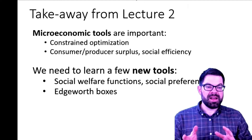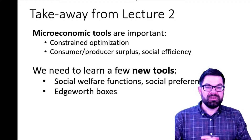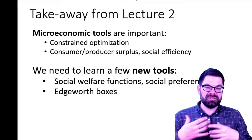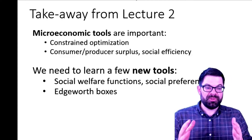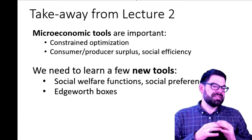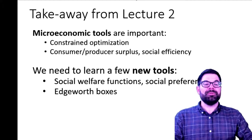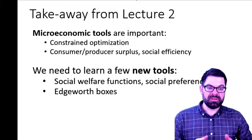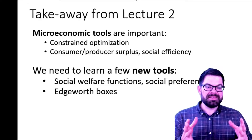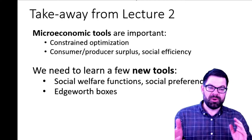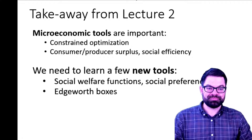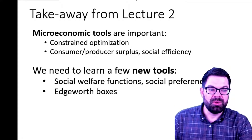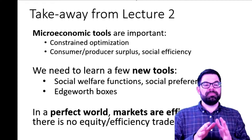Edgeworth boxes are a very compact way of visually analyzing general equilibrium, and you will see that even in some of the very advanced economics research, you will often see Edgeworth boxes. Typically, researchers prove something mathematically for a large number of goods, consumers, and firms, but they show the intuition behind their proof within this stylized example of an Edgeworth box — just two consumers, two firms, two goods — something that can be visualized. Edgeworth boxes are very useful and we will revisit them a few times in different parts of the course.